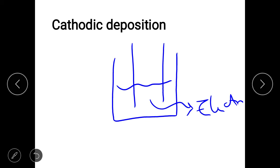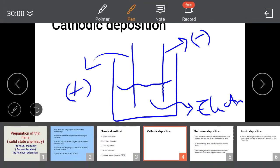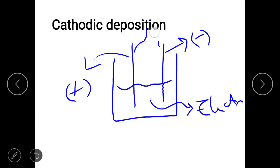One electrode acts as the cathode and the other as the anode. The cathode is the negatively charged electrode and the anode is the positive electrode. These are connected to an external power supply. Once you apply the external field across the electrodes, the metal ions present in the electrolyte begin to move.